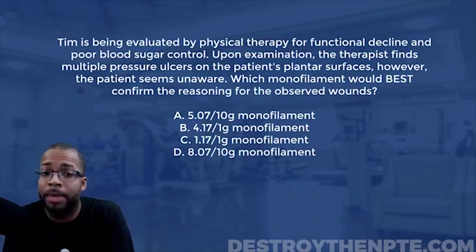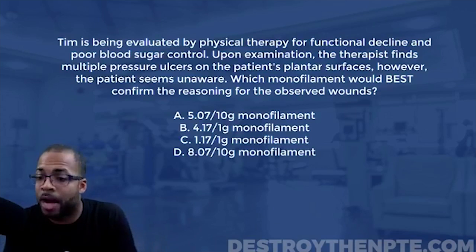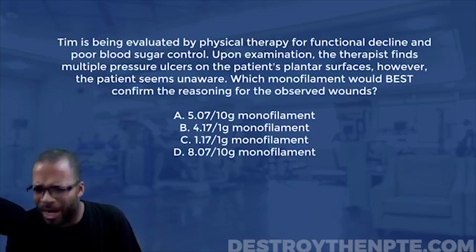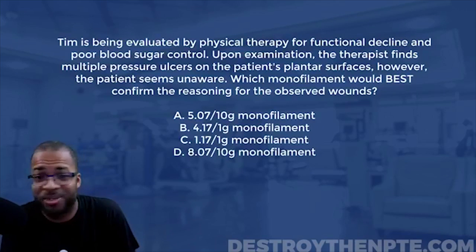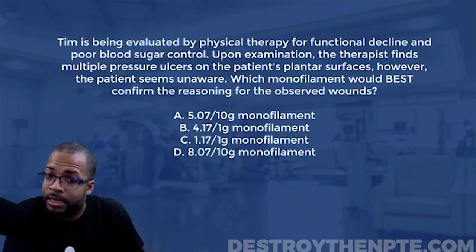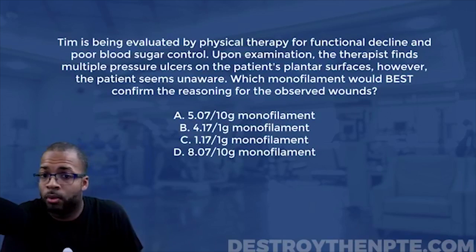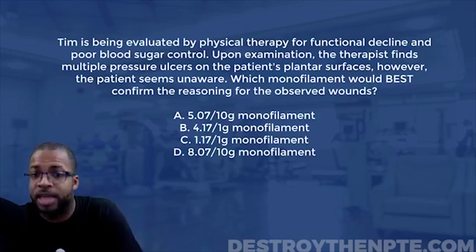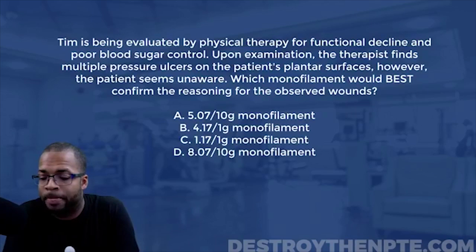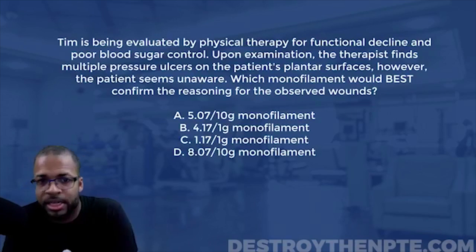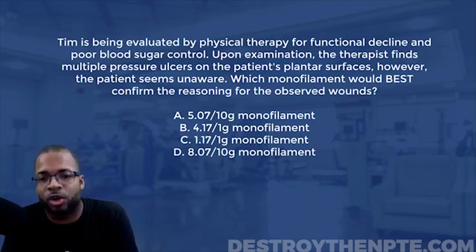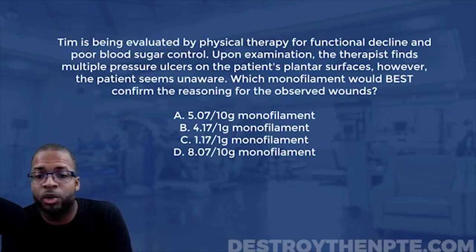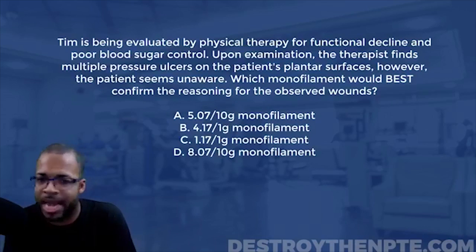Diabetic peripheral neuropathy is a very common occurrence with patients who have diabetes. Because of the excessive sugar in their blood going up and down each day, that sugar starts to eat away at the blood vessels and the nerves. We end up with difficulty with sensation, numbness, tingling, and problems like gangrene, necrosis, and amputation.